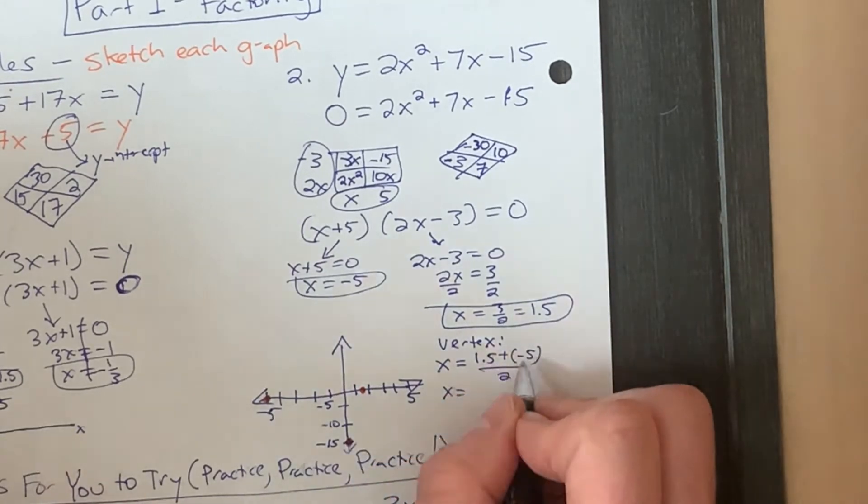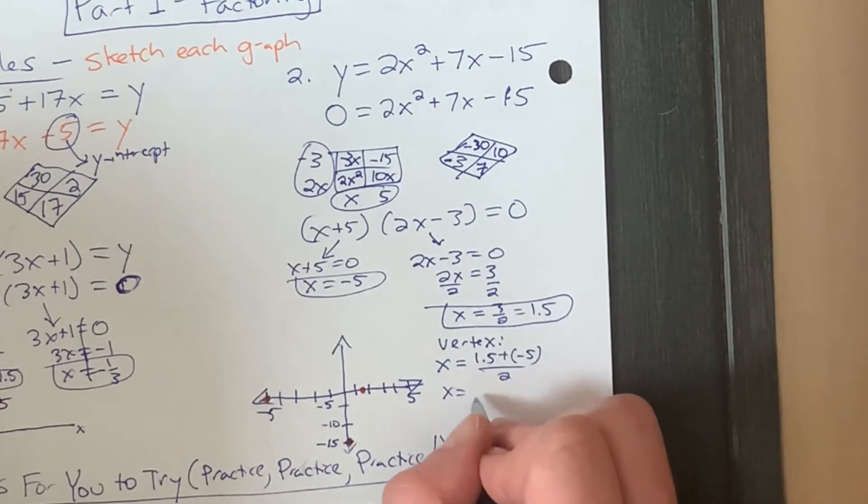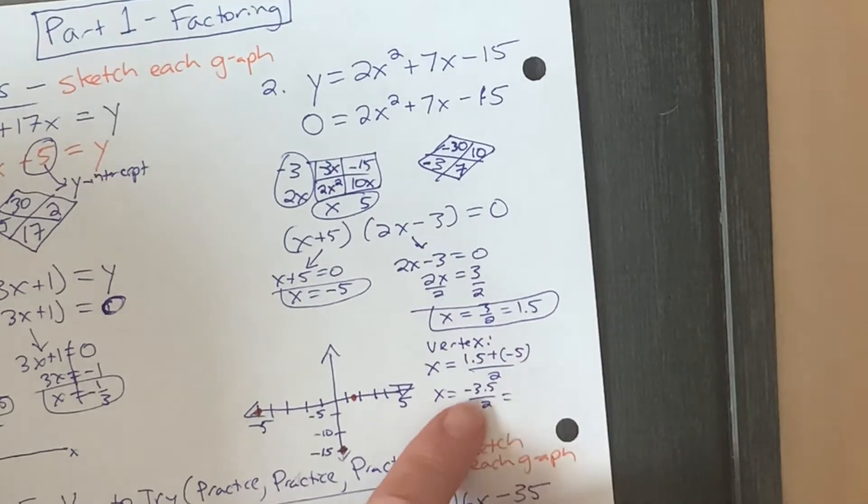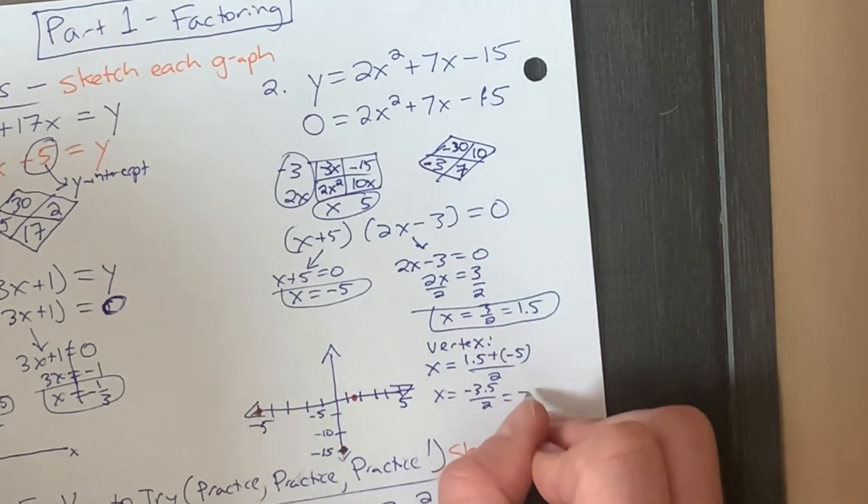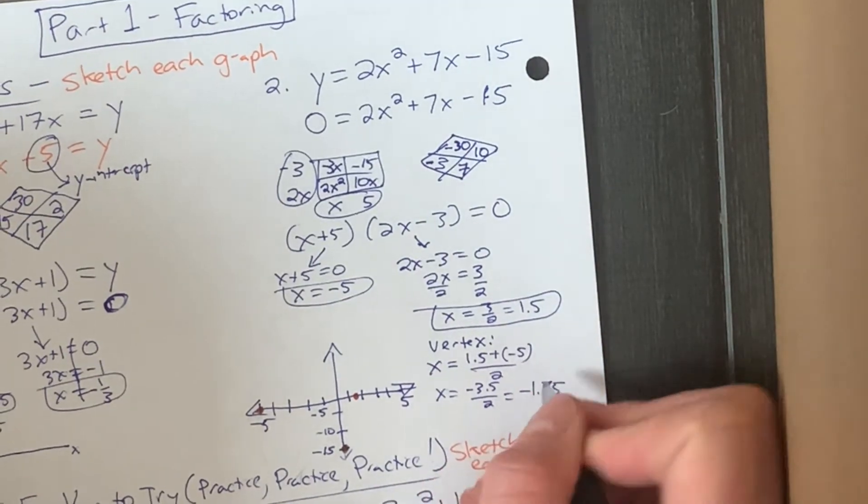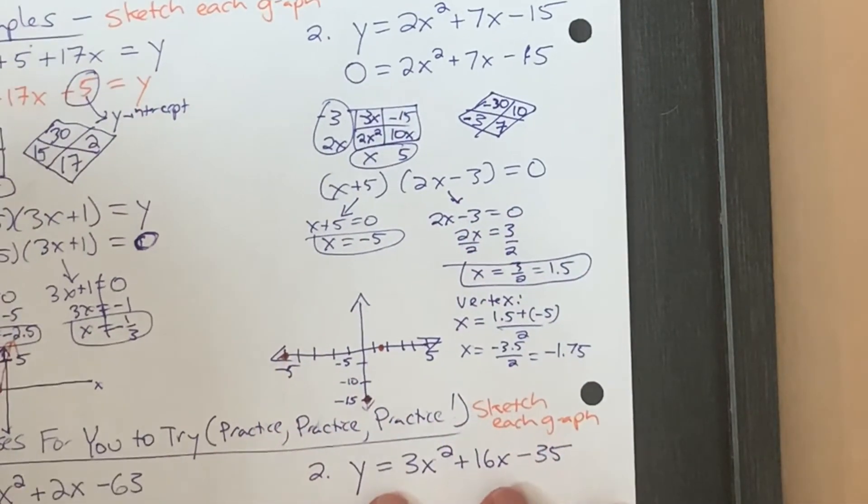So this would be negative 3.5 divided by 2. And if I do negative 3.5 divided by 2, use a calculator. You might be able to do that in your heads. But that's just going to be negative 1.75 is going to be where my line of symmetry is.